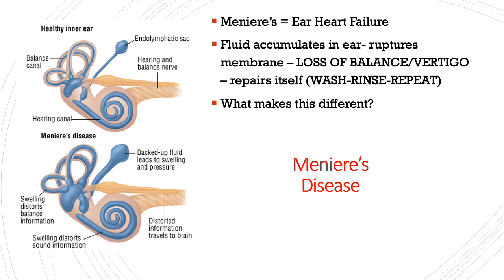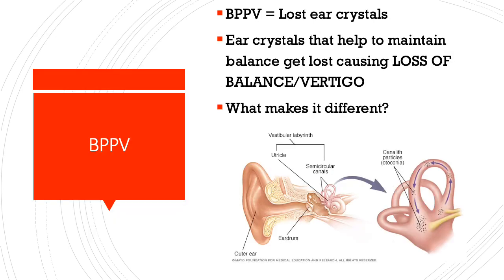Last but not least is BPPV — in simple terms, it's positional vertigo. The 'B' stands for benign, so unlike the other two ear conditions we just discussed, BPPV is very treatable and fixable. You actually have crystals in your ear — those crystals are supposed to be in a specific canal and help keep you balanced by telling your body where it is in space.